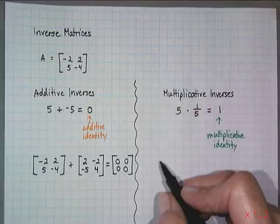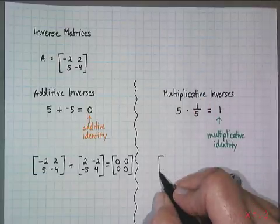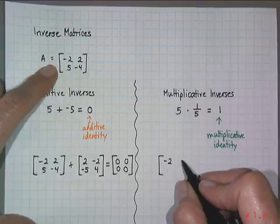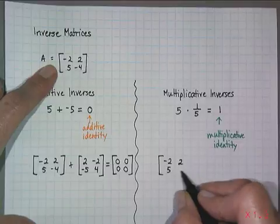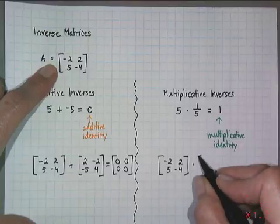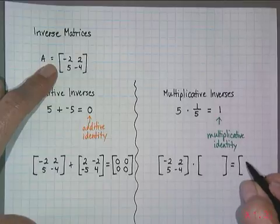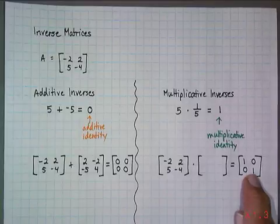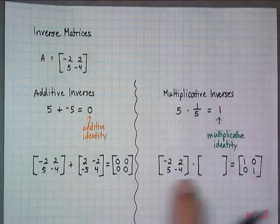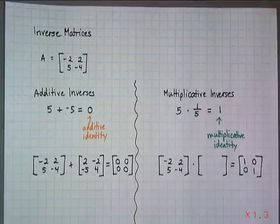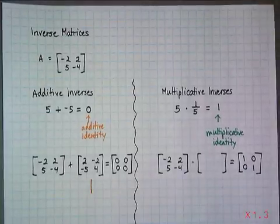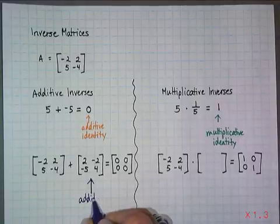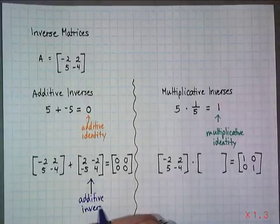Now multiplicative inverses are a little bit different, more difficult. When I multiply a matrix like matrix A, with elements negative 2, 2, 5, negative 4, by its inverse, the result is the identity matrix. That's the one where we have ones going along the diagonal and zeros everywhere else. The additive inverse is no big deal to find.